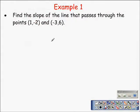You're being told to find the slope of a line that passes through the points 1, negative 2 and negative 3, 6. Until you become very comfortable with this, I'm going to suggest that you write down the slope formula, which is m equals y sub 2 minus y sub 1 all divided by x sub 2 minus x sub 1.